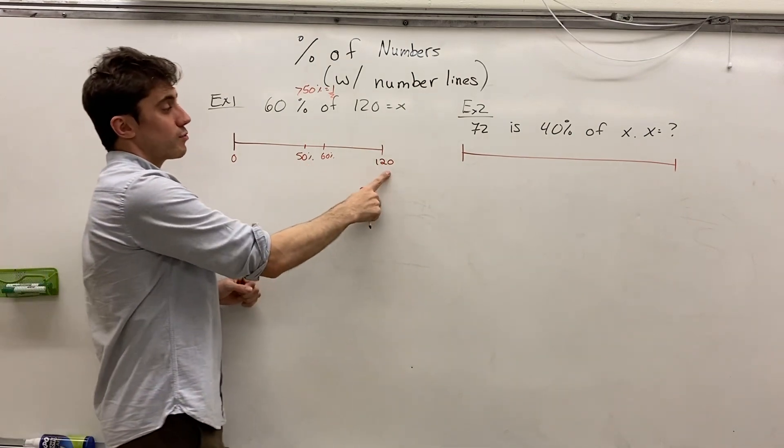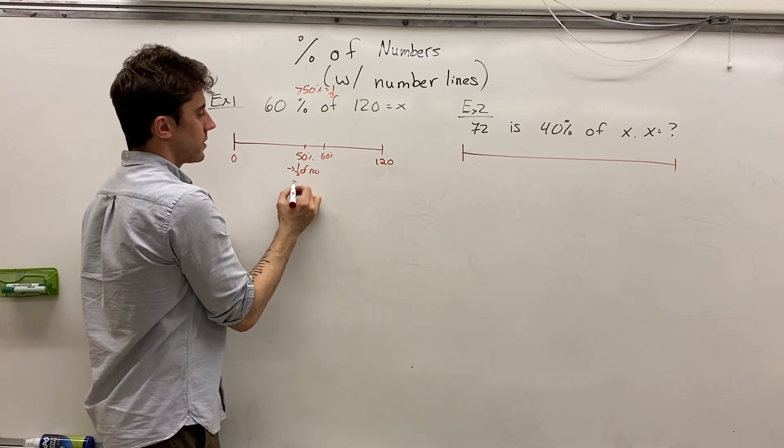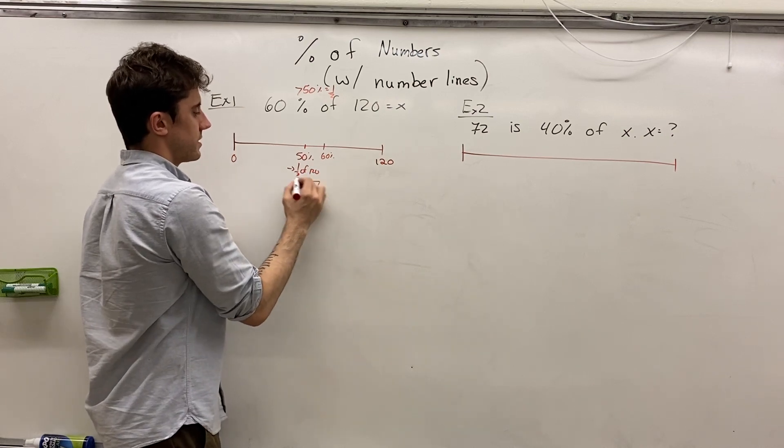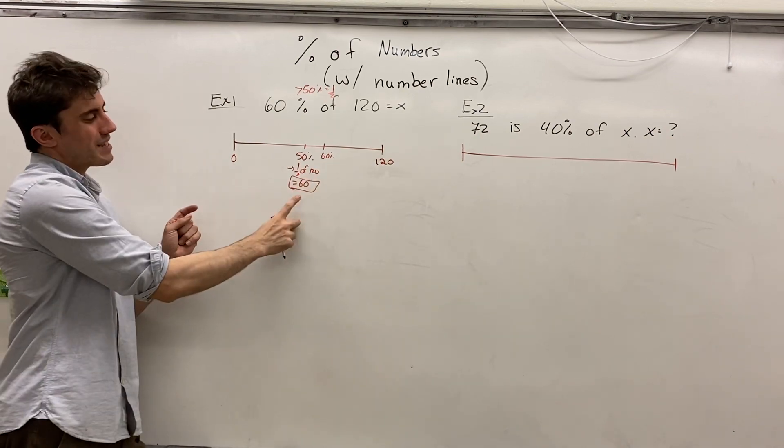Now 50% of 120 is pretty easy, right? That's one half of 120, which is clearly 60. And so we know that 60% is going to be a little bit more than 60.